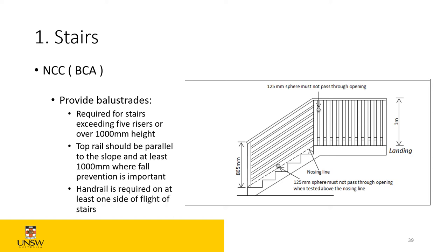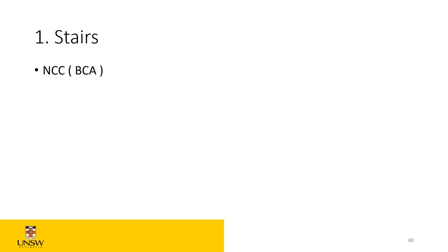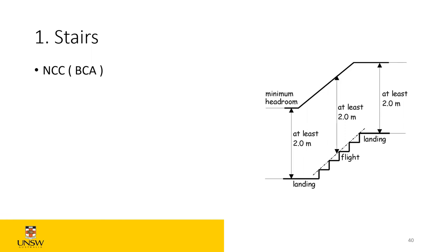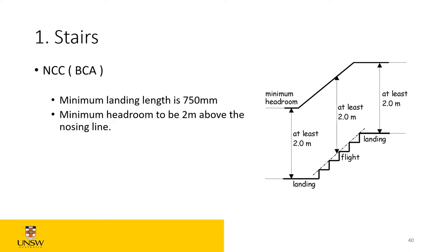A handrail is required on at least one side of the flight. The minimum landing length should be 750mm so you can maneuver when you stand there — though it's recommended to go to a full meter to stay safely within the code. The headroom required above the nosing line should be at least two meters — if you go below two meters it does not comply with the code.